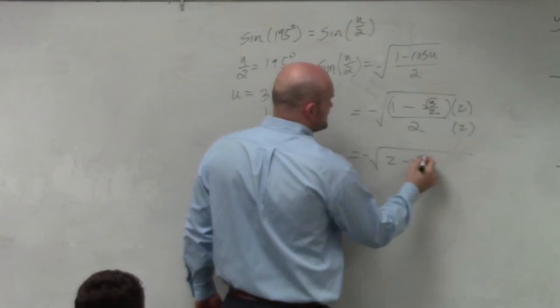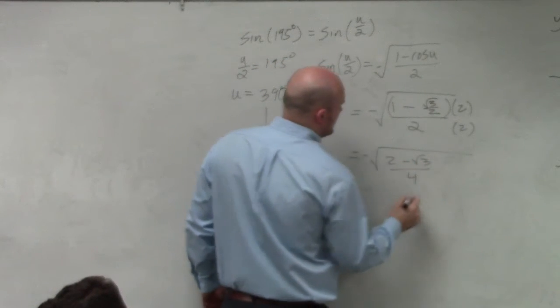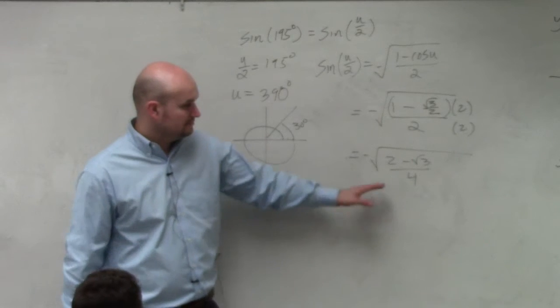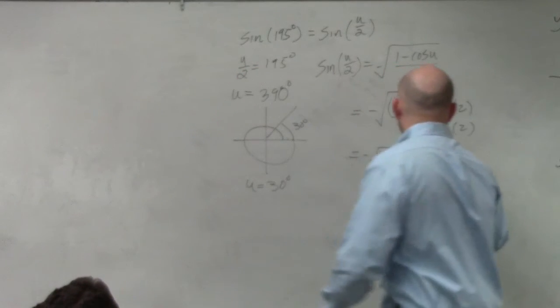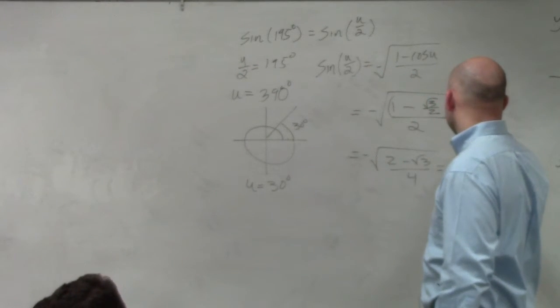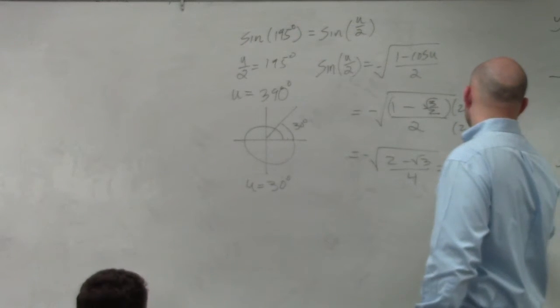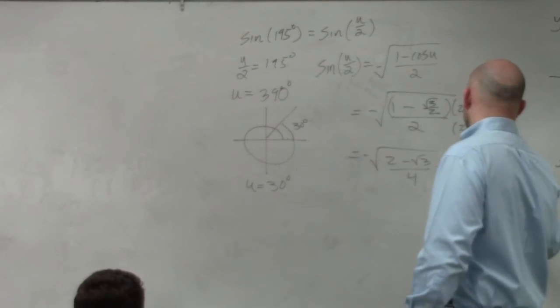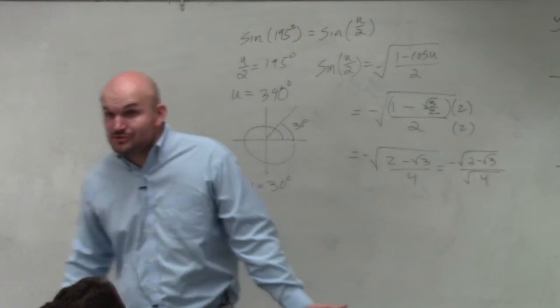By doing that I get 2 minus the square root of 3 over 4, which I can break up into negative square root of 2 minus the square root of 3 all over the square root of 4. Can I now take the square root of 4?